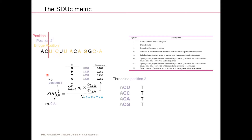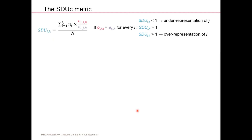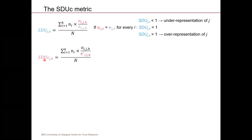It's easy to explain for position two, but it gets more complicated for the bridge position, where instead of single amino acids you have pairs — for example, CpU bridge can have 90 different amino acid combinations — but that's handled computationally. What does the metric actually mean? If for every informative amino acid in the K set the observed equals expected, then SDU equals one. If it's less than one there's underrepresentation; if more than one there's overrepresentation.